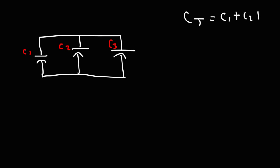Whenever you add capacitors in parallel to one another, the equivalent capacitance is the sum of the individual capacitances. So let's call this C1, C2, and C3. So CT is going to be C1 plus C2 plus C3.